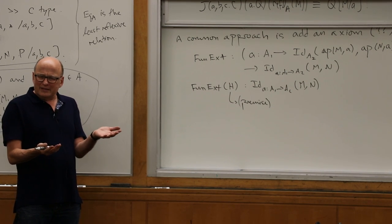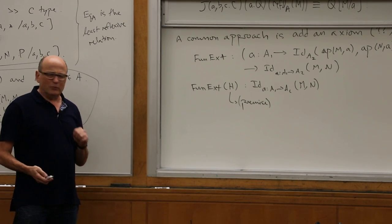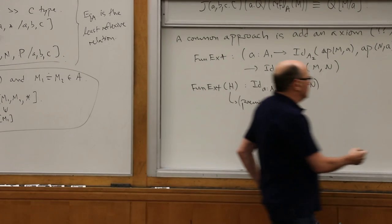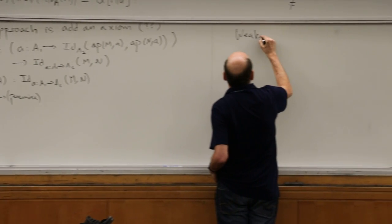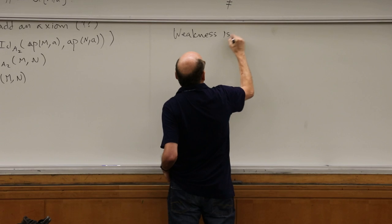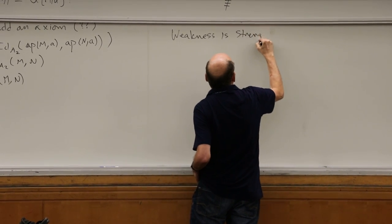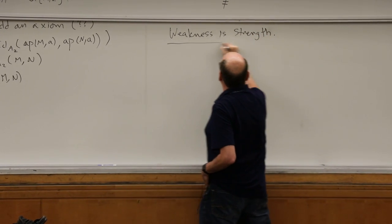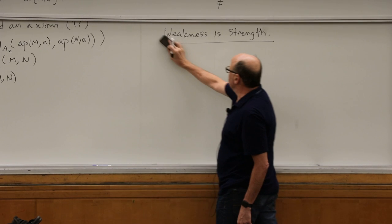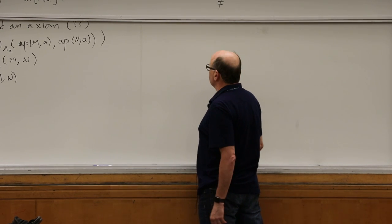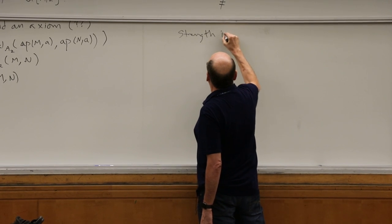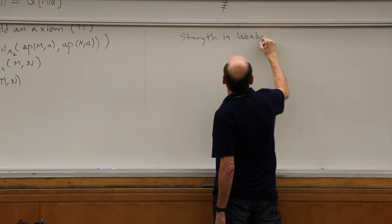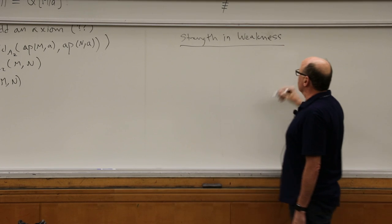It doesn't make sense to add axioms to type theory in a certain way, except for an important fact. My first point is that weakness is strength — there is a strength in weakness. This inspires lots of things.